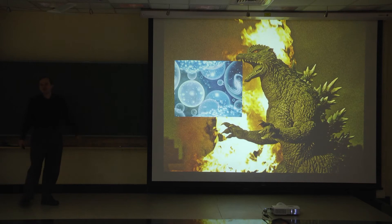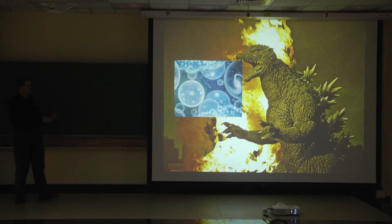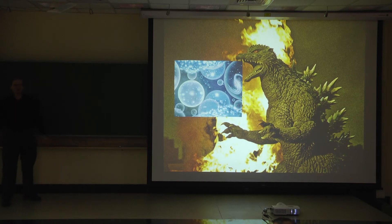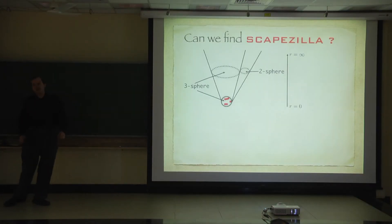This is supposed to represent the landscape, and this is some version of Scapezilla. So how can we find Scapezilla? How can we do calculations in type IIB?